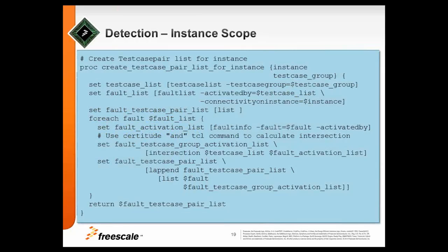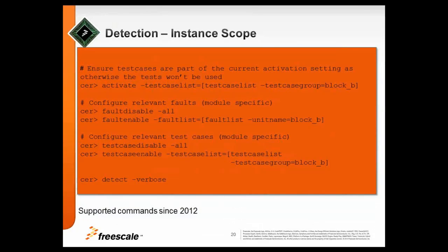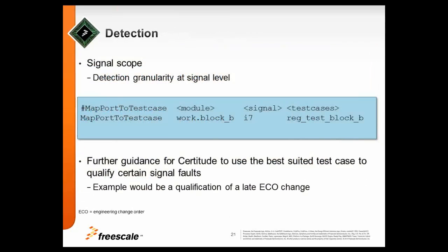After a while this kind of TCL code was no longer needed and you can use official commands for this. So, you see the activation, you disable all faults, you just enable the faults for this block B. Then you disable all test cases, you enable just the test cases for block B. And here you see the test case group comes into play again. And then you run the detect and then it's just running on the faults which are associated with your instance. And you add to your goal or to answer fast enough to actually make it work.